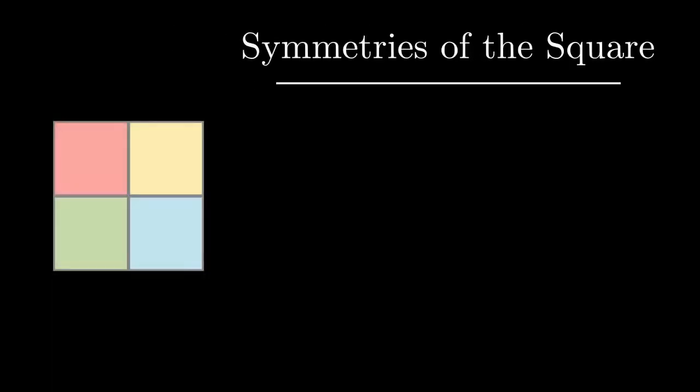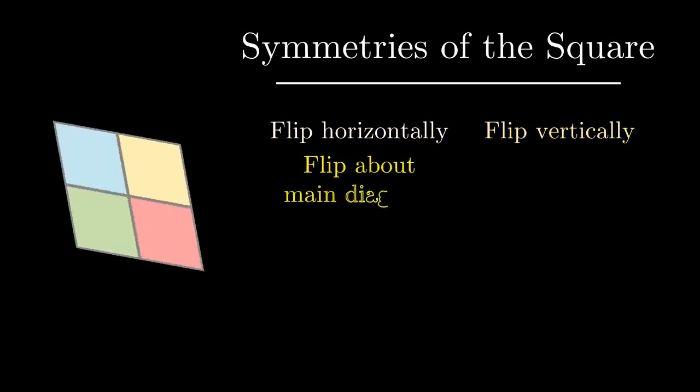To start, we have to get formal about what it means for two colorings to be the same. For our purposes, there are 8 transformations to consider. We can flip horizontally, vertically, or across either diagonal.